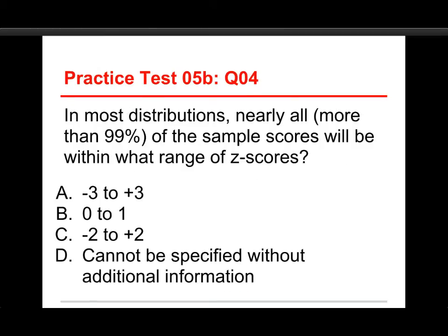Number 4. In most distributions, nearly all, that is more than 99%, of the sample scores will be within what range of z-scores? The choices are minus 3 to plus 3, 0 to 1, minus 2 to plus 2, or it cannot be specified without additional information. Well, the answer to this one is minus 3 to plus 3, and I can show you that. Now, let me just say this bottom one. The idea that it cannot be specified without additional information, that's not true because we know this is true for most distributions, and particularly normal distributions when we're dealing with z-scores.